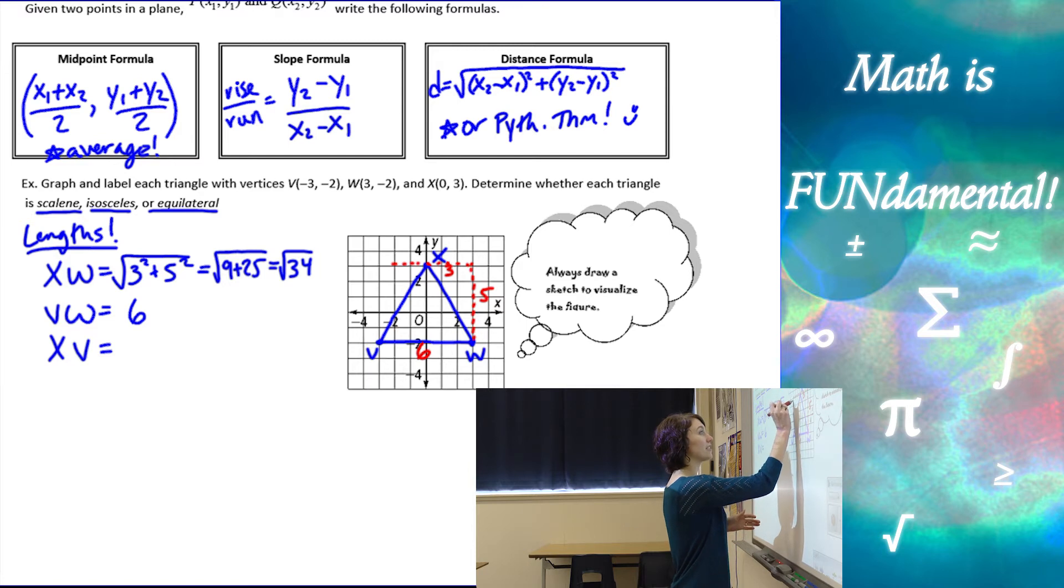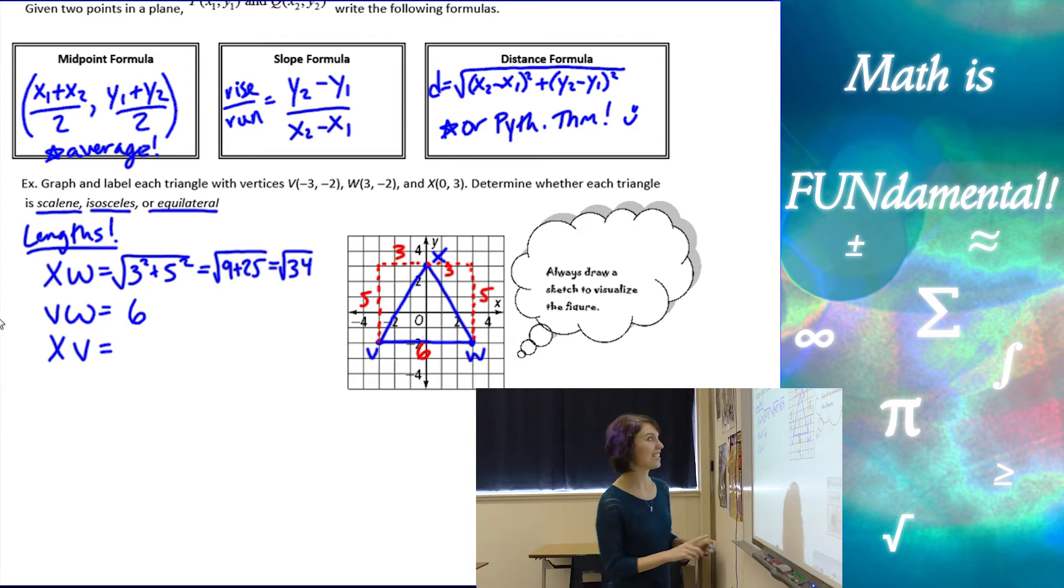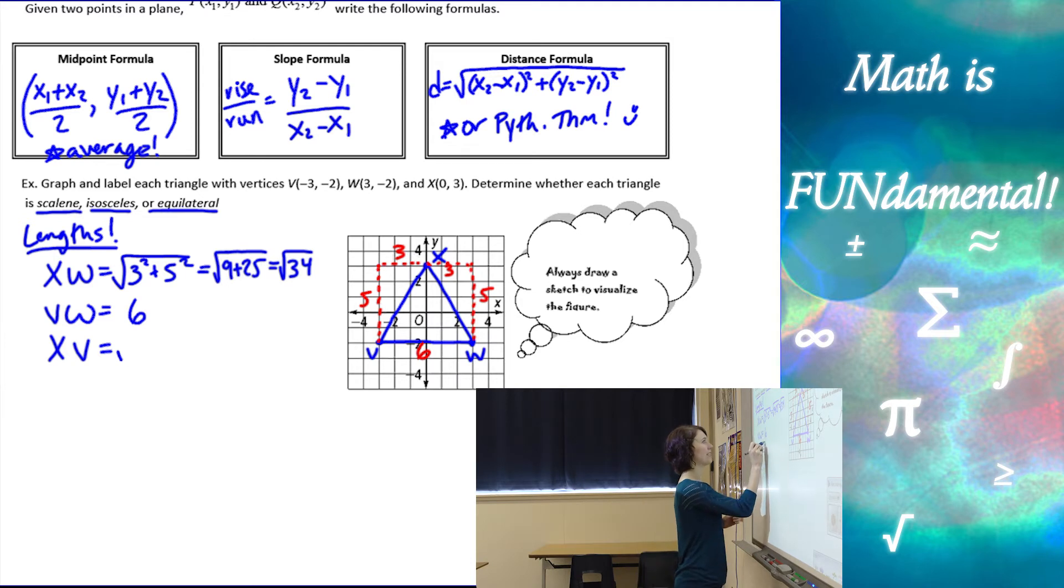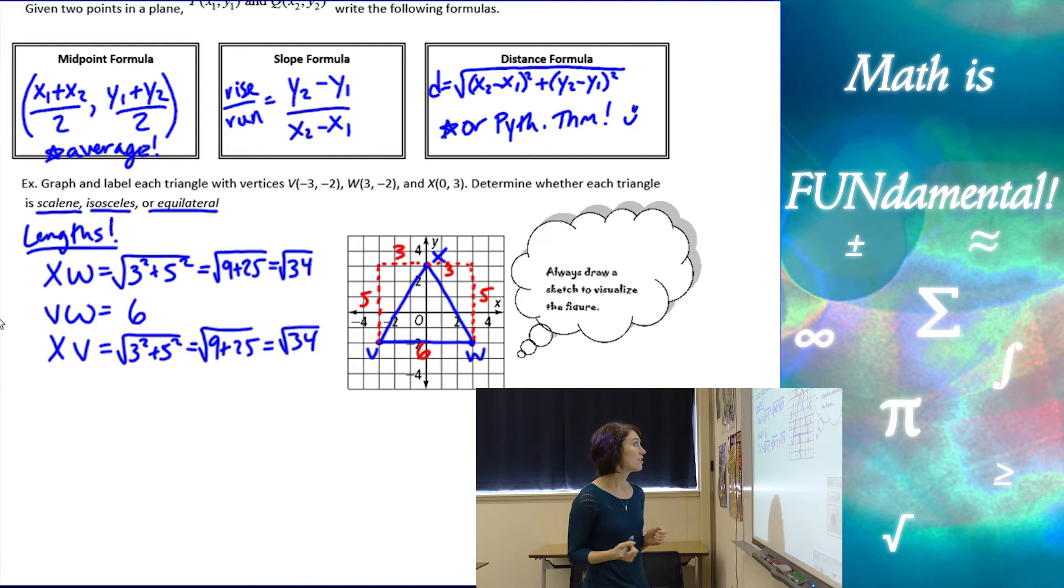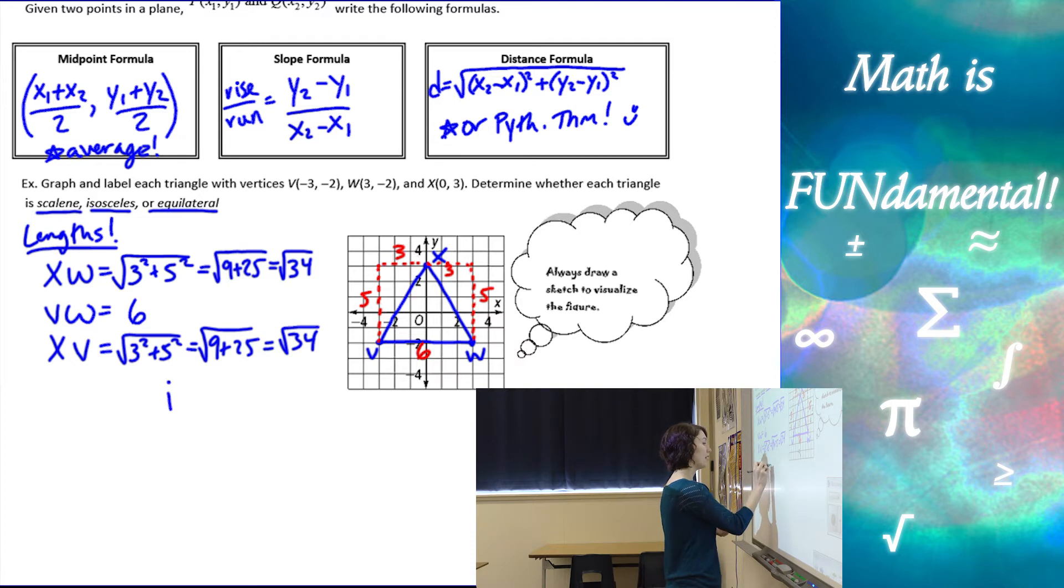Alright, and then let's find the lengths of these sides. So from 0 to negative 3 is a length of 3. And then this is 5. So if I look at my graph, I can kind of see already that it's going to be the same as xw. But we want to show our work. So we've got to follow all the way through and find each length. So here I have 2 sides that are the same length, 1 side that is different, which makes this an isosceles triangle.